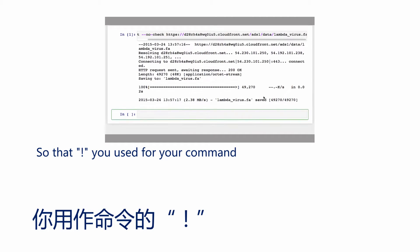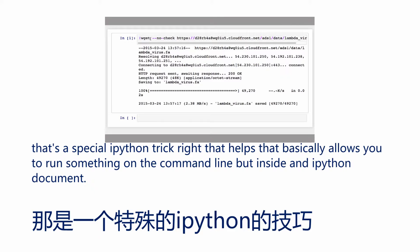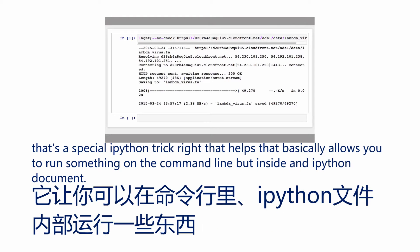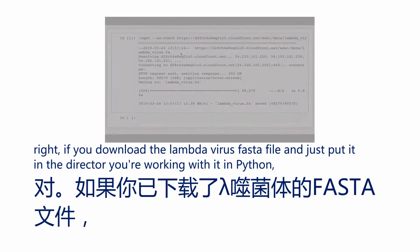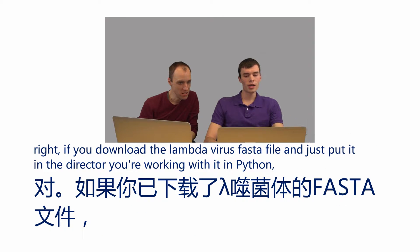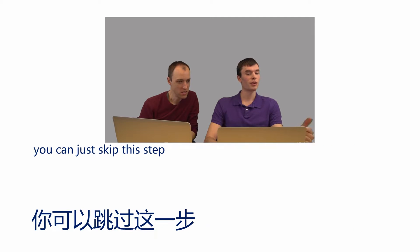That exclamation point is a special IPython trick — it basically allows you to run something on the command line inside an IPython document. If you download the lambda virus FASTA file and just put it in the directory you're working with in Python, you can just skip this step.